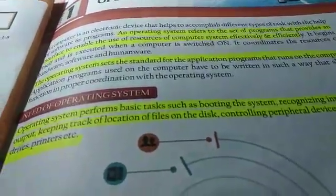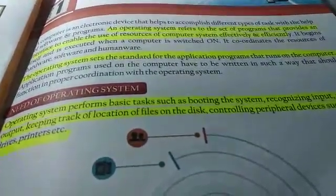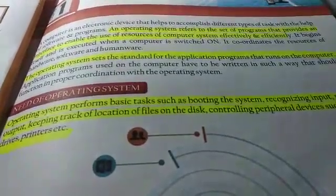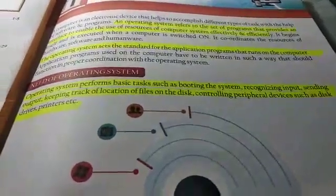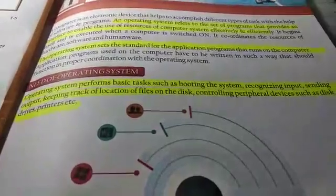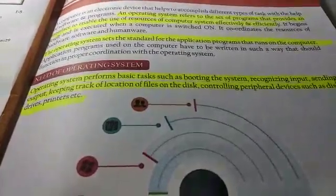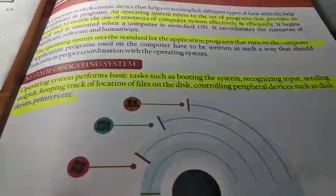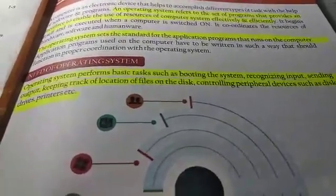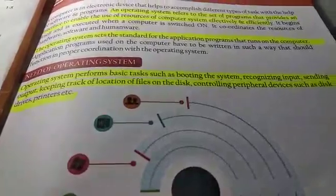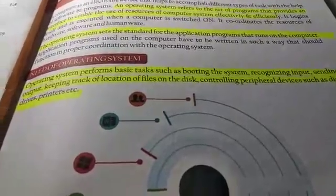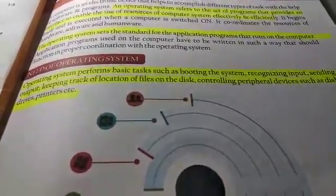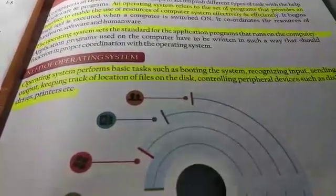Now, what is the need of an Operating System? An Operating System has a lot to do in a computer. One of its basic tasks is booting of the system. Booting of the system means to start the computer and make it ready to accept the commands given by the user. As soon as you switch on the system, a computer takes one or two minutes to get started — that time is taken by the Operating System to make your computer ready.